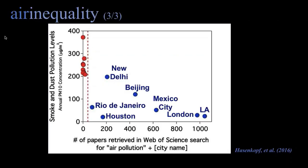Another way to look at this is through research done in various cities relative to their pollution levels. This graph shows on the x-axis the number of papers retrieved for various cities in a Web of Science search for that city's name and the term 'air pollution' — a sense of how many studies have been published. Not surprisingly, LA, London, Mexico City, and Beijing each get several hundred papers. The y-axis shows PM10 annual average concentrations for each of those cities. This is from 2011 data.